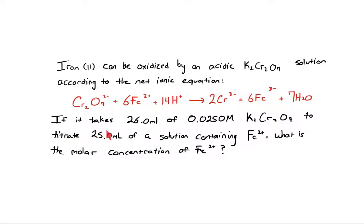If it takes 26 milliliters of 0.0250 molar potassium dichromate to titrate 25.0 milliliters of a solution containing the iron(II) ion, what is the molar concentration of that iron(II) ion?